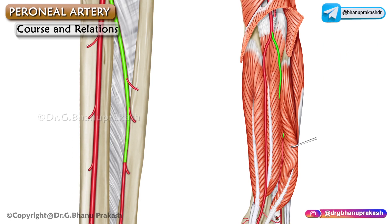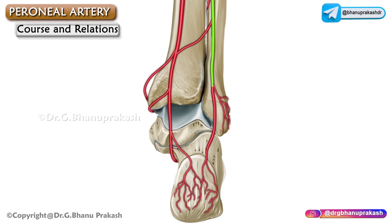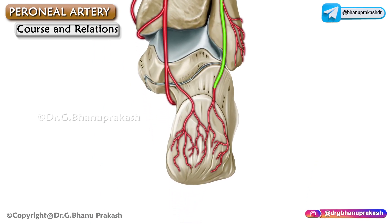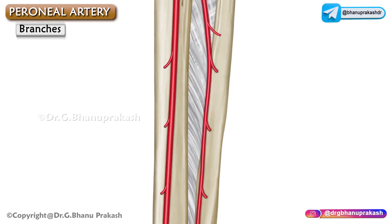It travels in the fibrous canal between the tibialis posterior as well as flexor hallucis longus. It then passes behind the inferior tibiofibular and ankle joints and ends on the lateral surface of the calcaneus, where it terminates by giving the lateral calcaneal arteries. That is the course of the artery.